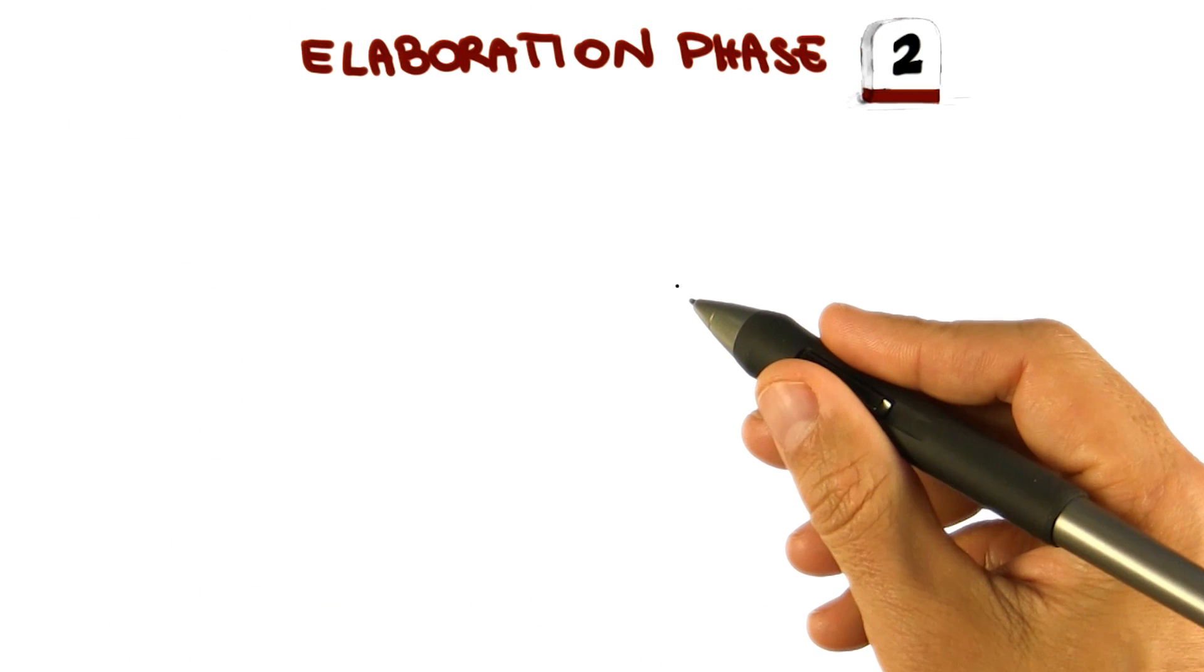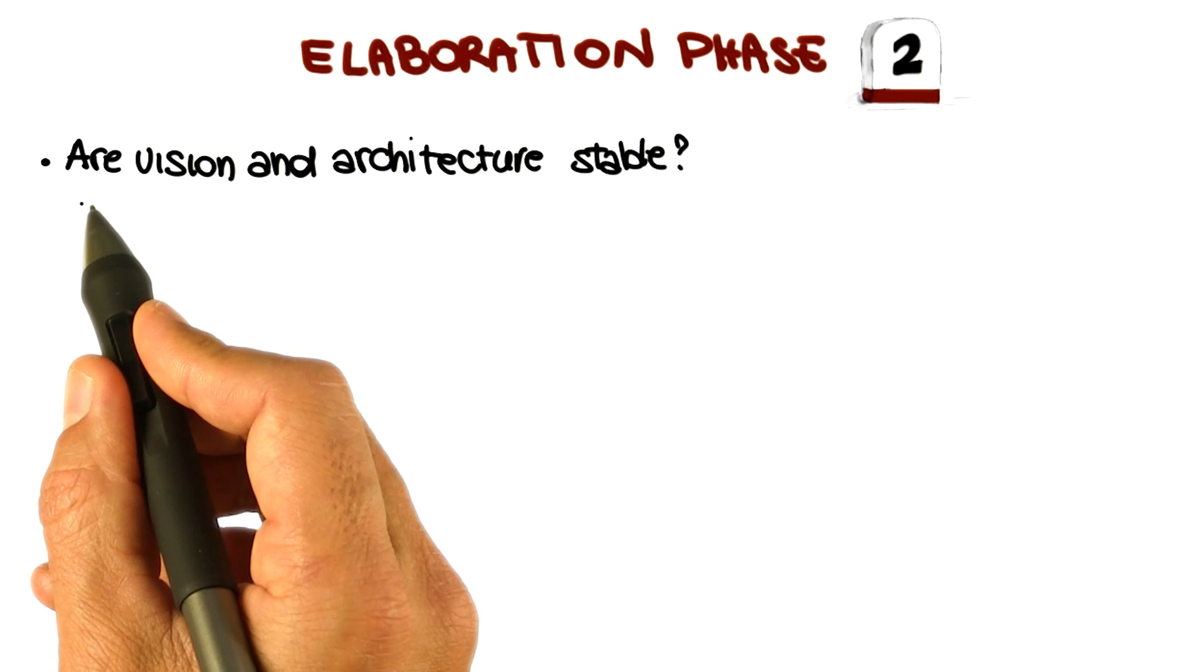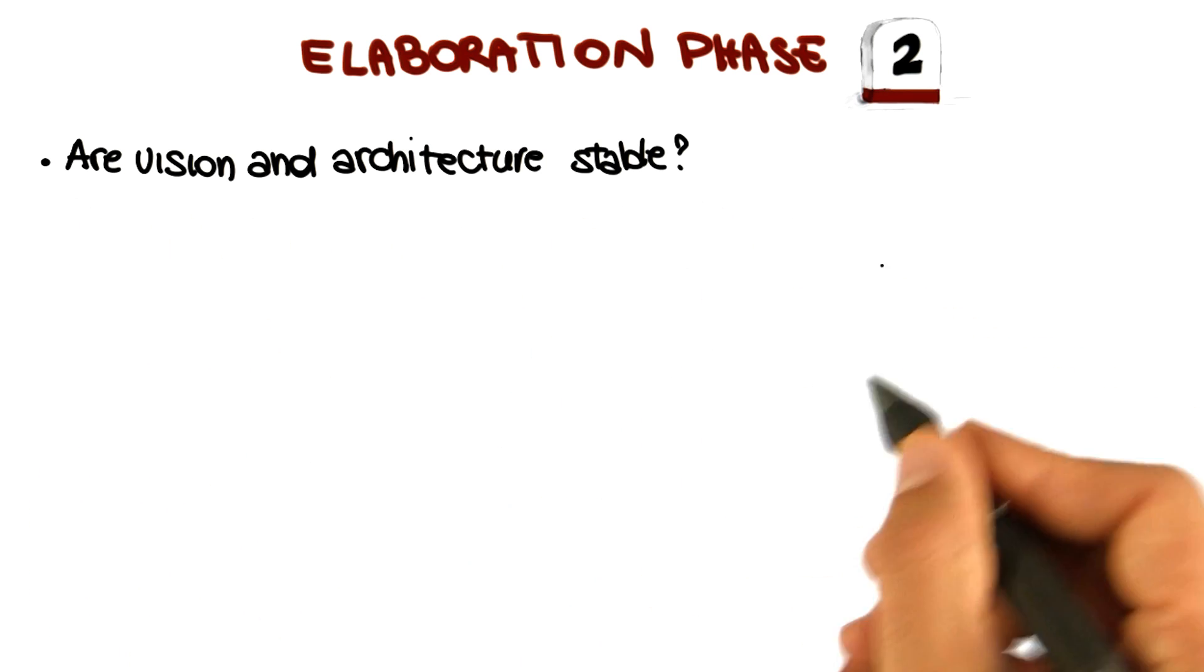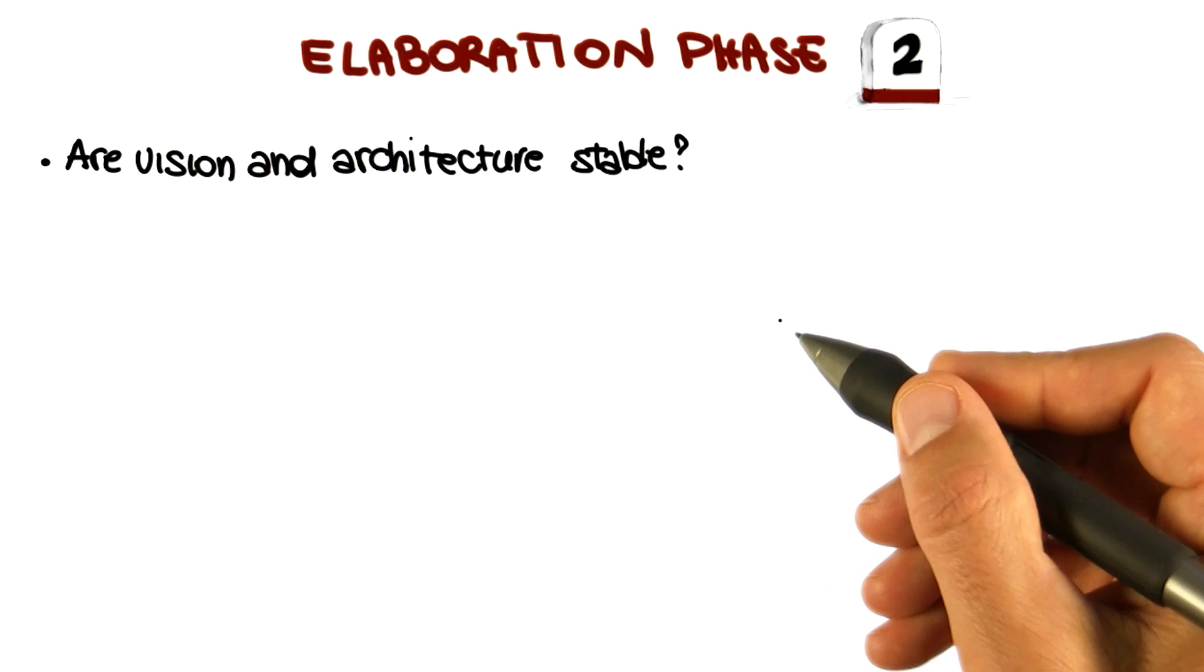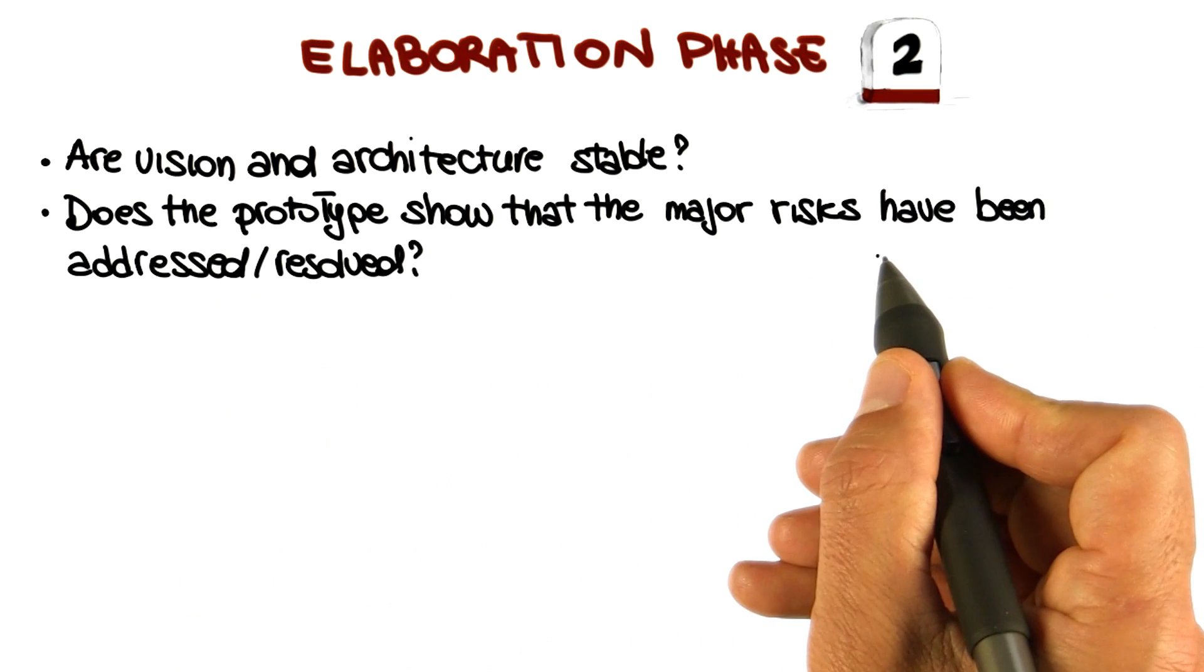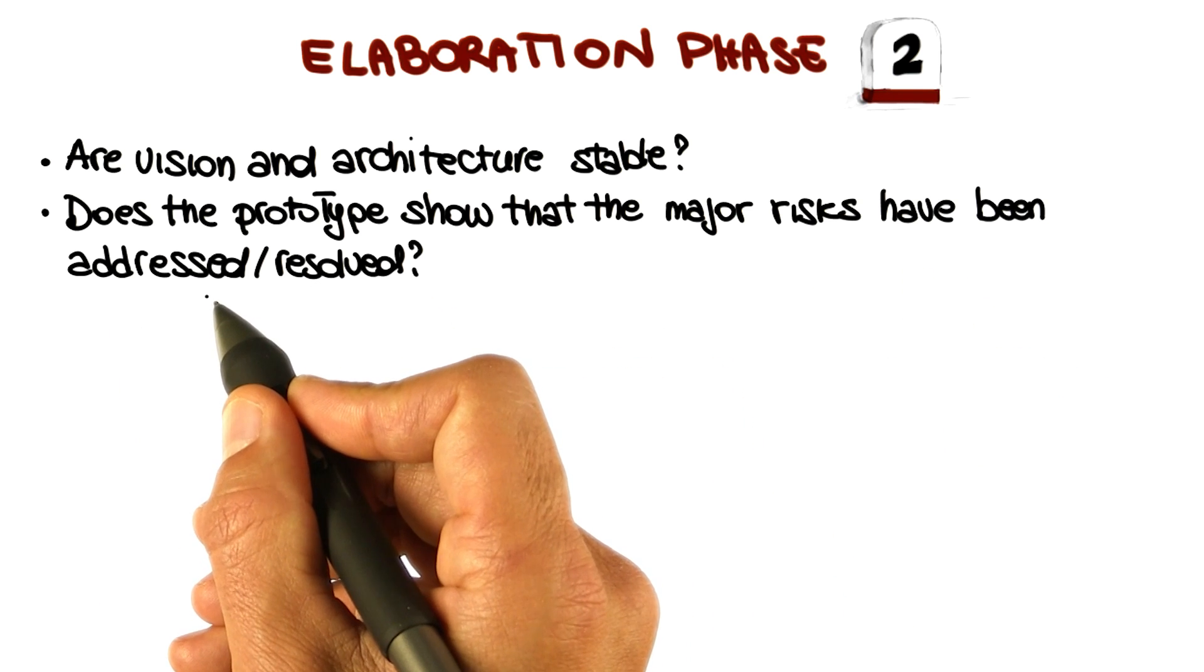Now let's see what are the evaluation criteria for the elaboration phase, which is our second milestone. The first one is whether the vision and the architecture are stable or they're still changing. Did we converge into a final complete vision for the system? Does the prototype show that the major risks we have identified have been resolved or at least addressed in this phase?